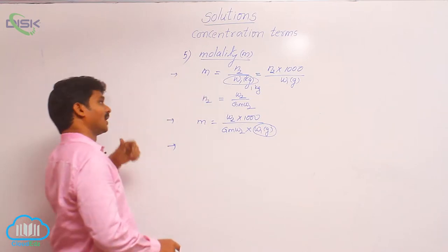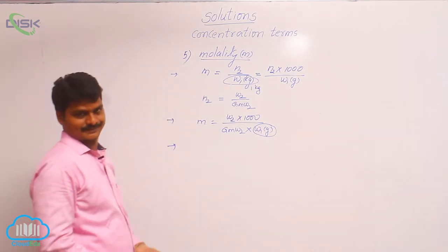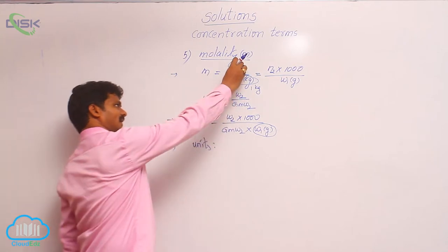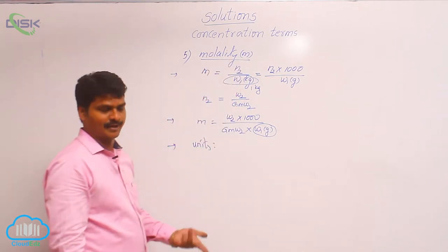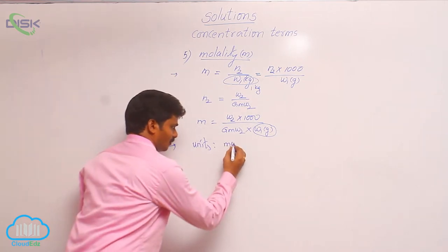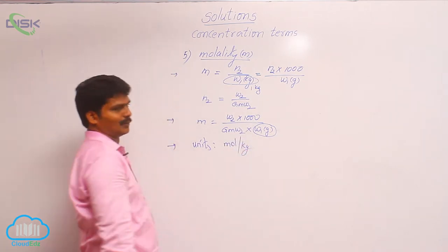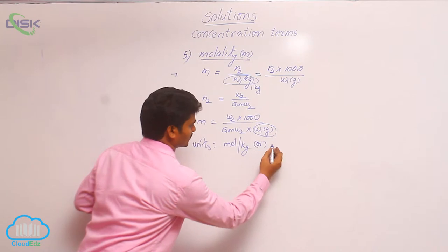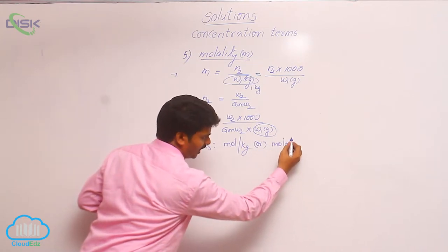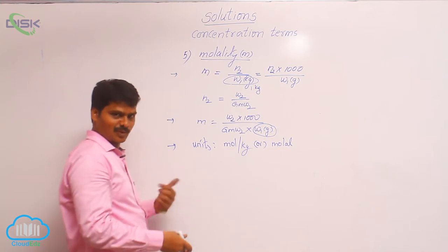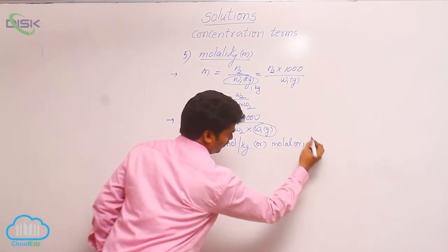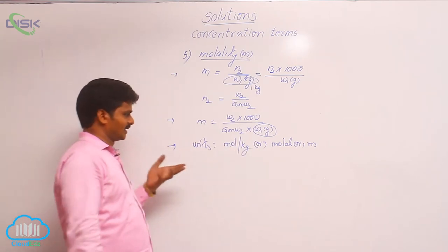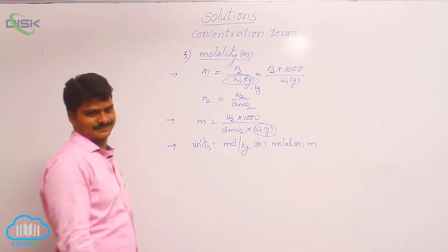Next, how does molality depend on temperature, and what are its units? In the numerator there are number of moles; in the denominator, weight of solvent. That is why the unit is mol per kg. We can also say molal, or use small m. So mol/kg, molal, or small m are all representations of the units of molality.